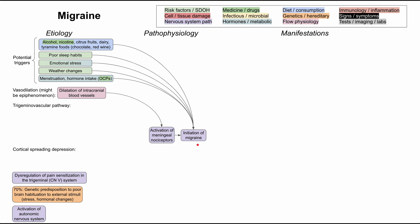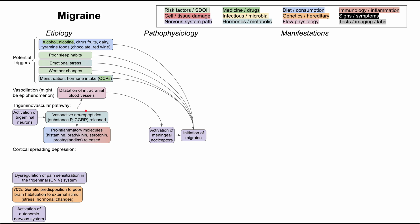Another common pathway is the trigeminovascular pathway. The idea is that activation of the trigeminal neurons results in the release of vasoactive peptides — including substance P and CGRP. These firstly dilate the intracranial blood vessels, which may be the epiphenomenon of vasodilation. They also trigger the release of pro-inflammatory molecules, including histamine, bradykinin, serotonin, and prostaglandin.